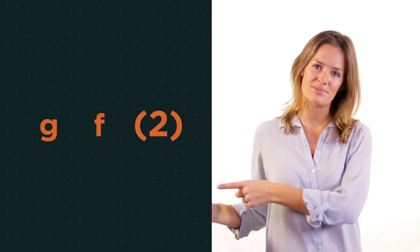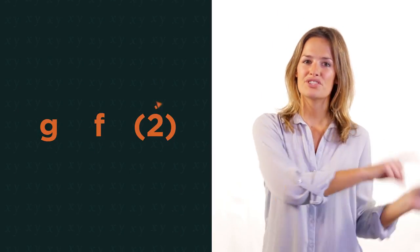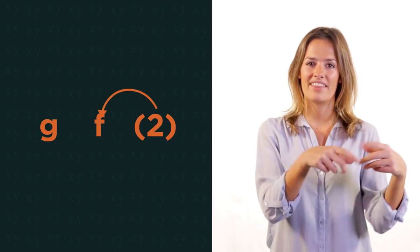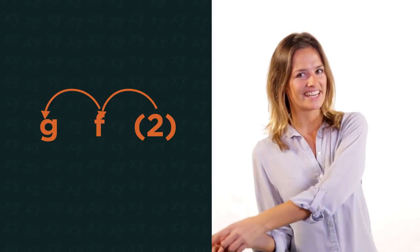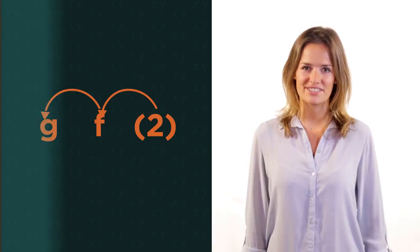So there we have composite functions. We can combine multiple functions into one function. You just need to remember to read backwards, so from right to left. Put 2 into f, and then the output of that into g. We'll look at inverse functions and the graphs of functions in other videos.